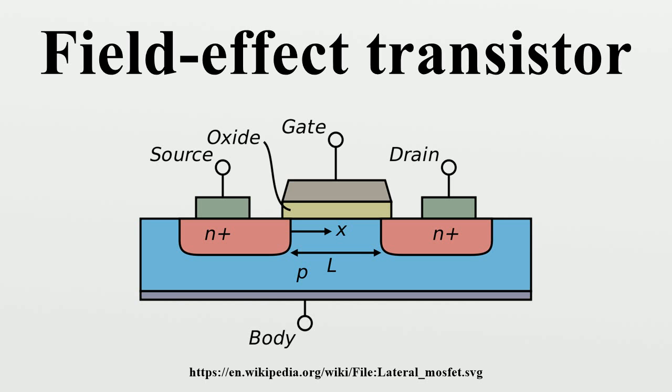Types of field effect transistors: The channel of a FET is doped to produce either an N-type semiconductor or a P-type semiconductor. The drain and source may be doped of opposite type to the channel, in the case of enhancement mode FETs, or doped of similar type to the channel as in depletion mode FETs. Field effect transistors are also distinguished by the method of insulation between channel and gate.